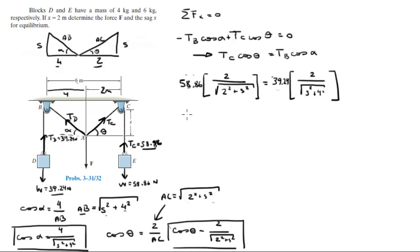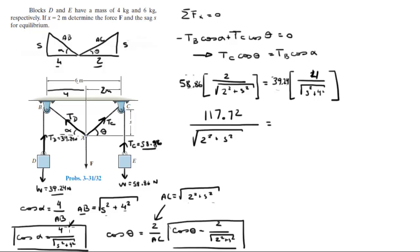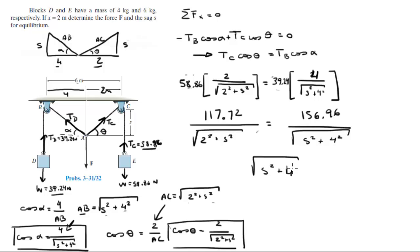Start solving this equation — pass each term to the other side. Multiplying 58.86 times 2 gives 117.72 over the square root of 4 plus S squared, equal to 39.24 times 4 which equals 156.96 over the square root of S squared plus 16. So the ratio of S squared plus 16 over 4 plus S squared equals 156.96 divided by 117.72, which comes out to 1.3333.